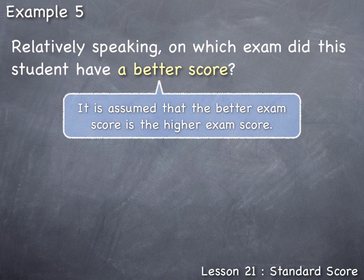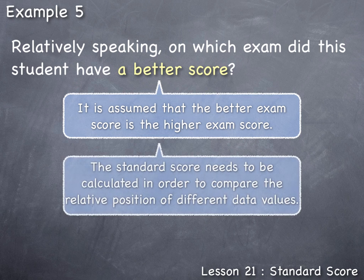The standard score is the result that allows us to do that. The standard score needs to be calculated in order to compare the relative position of different data values. Since the data we have is from the entire population of history exams and from the entire population of statistics exams, we will use the population version of the standard score formula, which is given by z equals x sub i minus mu sub x, all divided by sigma sub x.